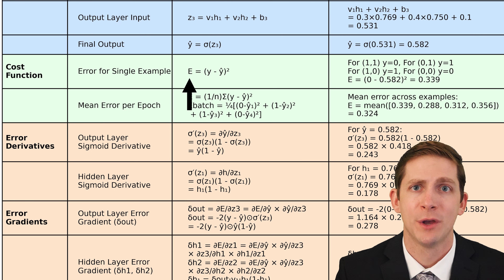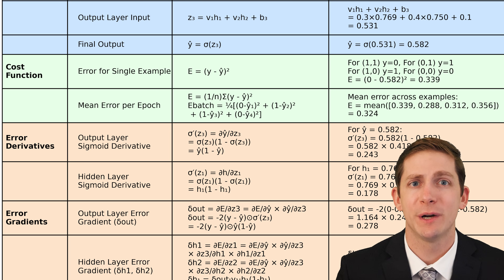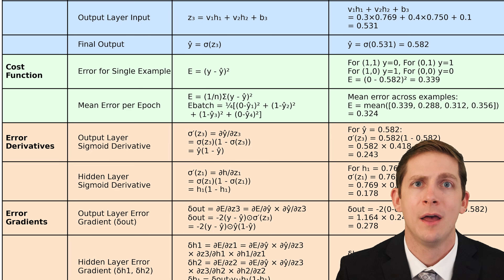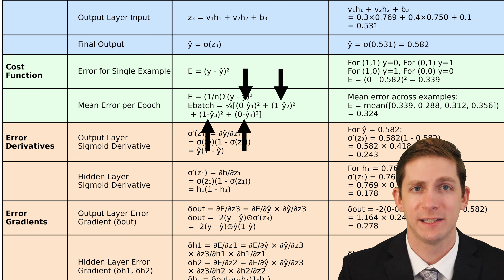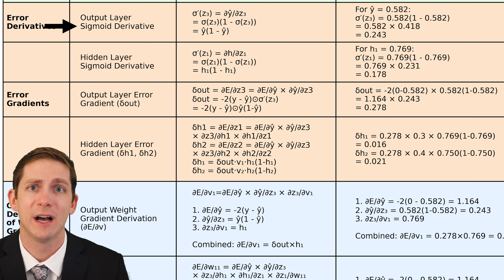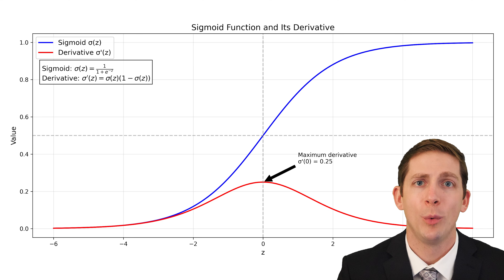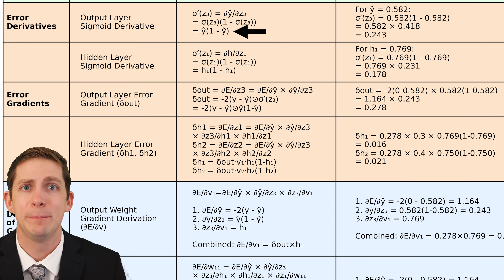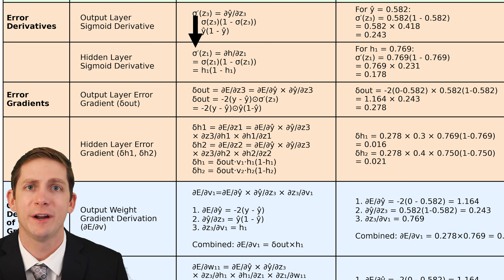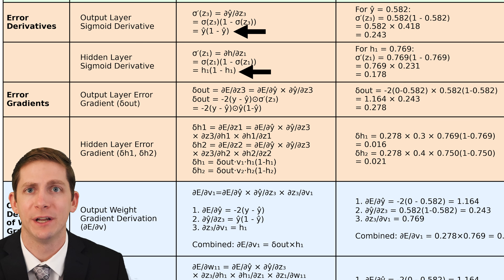Next, we calculate the cost function, which is the square of the difference between the actual Y value and the predicted Y value. While plotting the cost function helps visualize convergence, it isn't directly used in backpropagation — instead we use its derivative. The mean error per epoch provides another way to track convergence by averaging the errors across all four XOR cases. Next, we calculate the error derivatives beginning with the output layer. The partial derivative of Y-hat with respect to Z3 is equivalent to the derivative of the sigmoid function with respect to Z3. The result is a basic algebraic expression: the predicted output Y-hat times the result of 1 minus the predicted output. The hidden layer error derivative is also found by taking the derivative of the sigmoid function, using H1 rather than Y-hat.